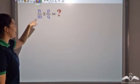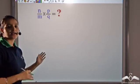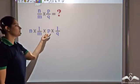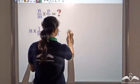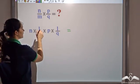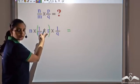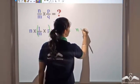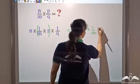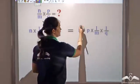Now the question is: what would n by m times p by q be? I apply what I know so far. I can write n by m as n times 1 by m, and p by q as p times 1 by q. Since multiplication is commutative, I can interchange the numbers, so 1 by m being multiplied by p can be swapped, giving n times p times 1 by m times 1 by q.